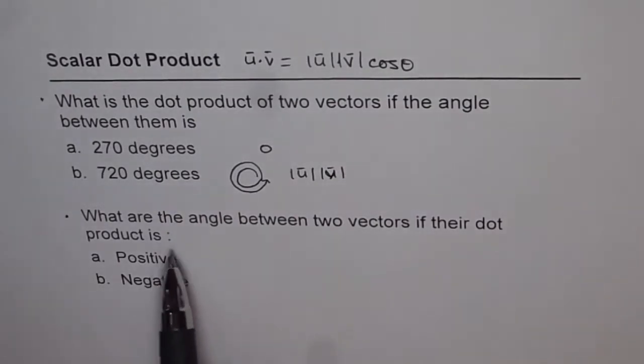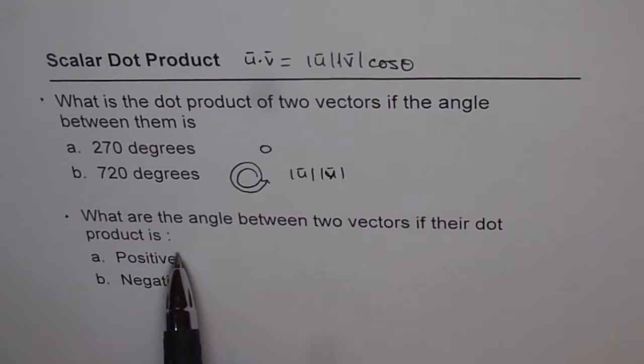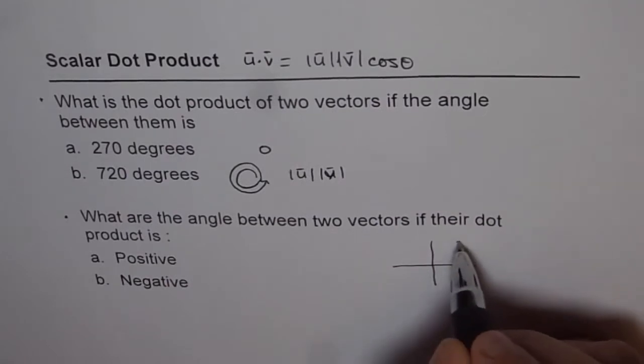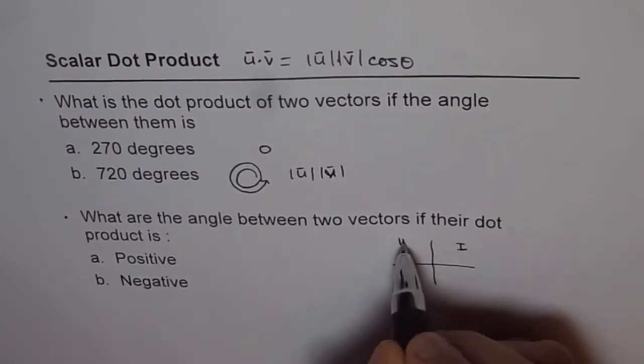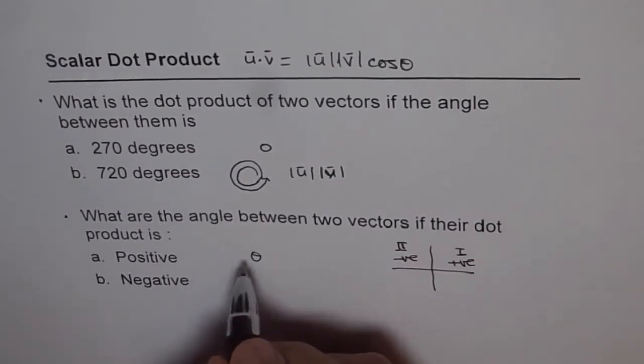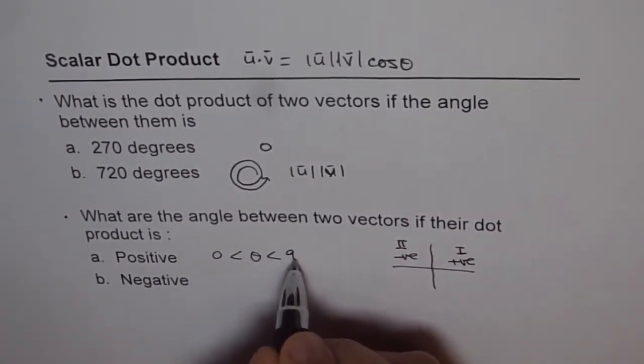Now the next question is, what are the angles between two vectors if their dot product is positive or negative? As you know, cos θ is positive in coordinate 1 and is negative in coordinate 2. So if the dot product is positive, that means θ is greater than 0 but less than 90 degrees.